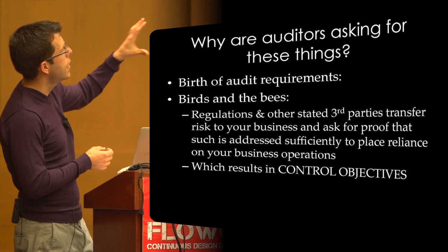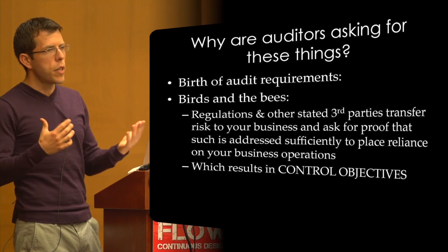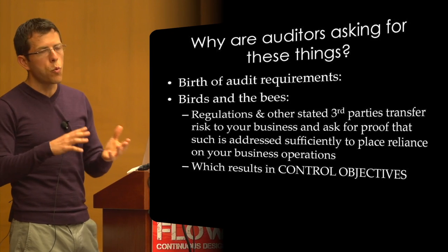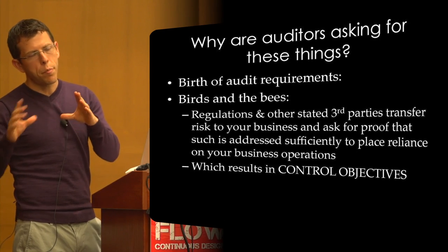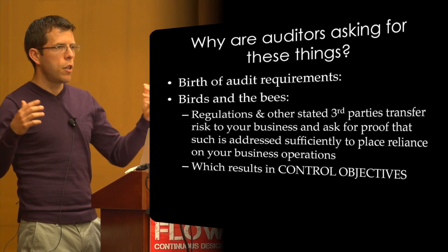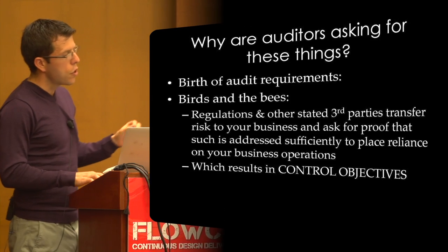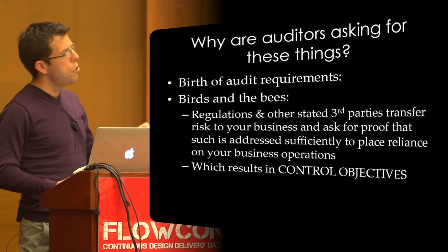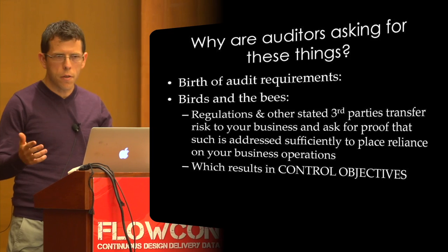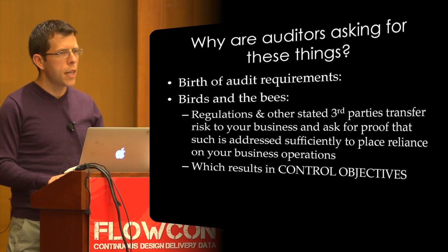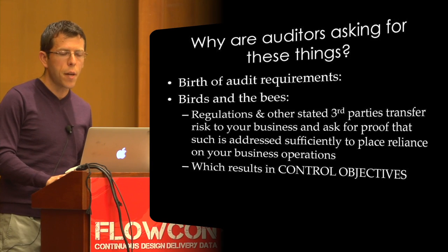Why are auditors asking for these things? The birth of audit requirements: regulations and other state risks and concerns draw up control objectives. When looking at your organization, there are control objectives and then procedures. Control objectives are 'thou shalt do good' — and then, well, how are you going to do that? There are sub-parts behind that. The control objectives are very important because that is what you use when communicating to the business as to how your continuously deploying operations fit into this model. When you're being audited, you need to think about it from that level.